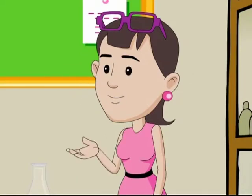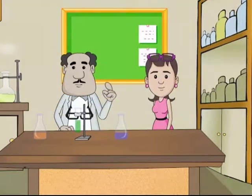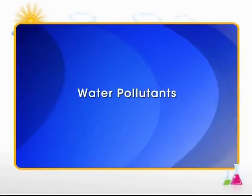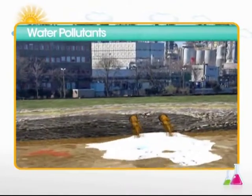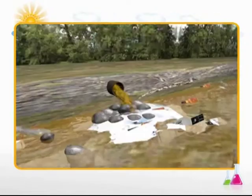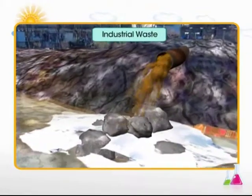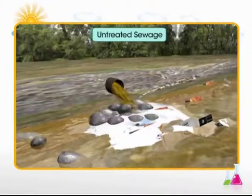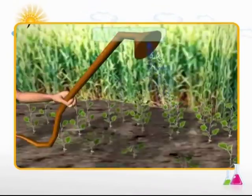I would like to know about water pollution and its sources. Sure, Binny. Let's enter the world of science to know more about water pollution. Let's enter the virtual world. Qualitative change in water due to addition of undesirable substances is called water pollution. The main sources of water pollution are industrial waste, untreated sewage, fertilisers, detergents, oils, pesticides and litter.